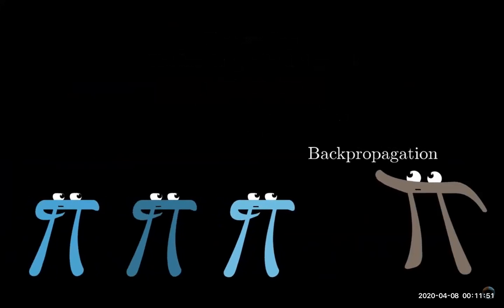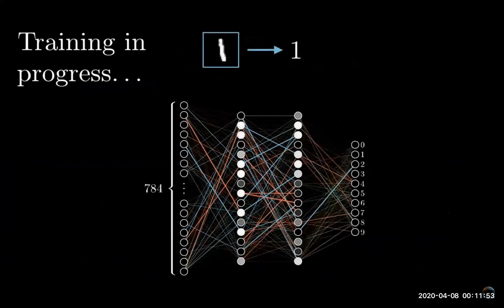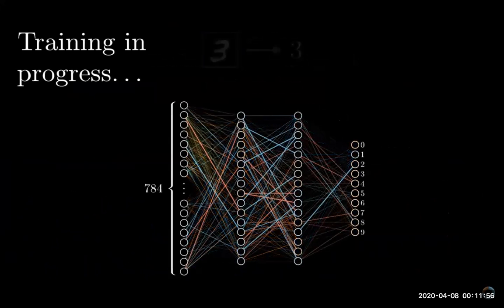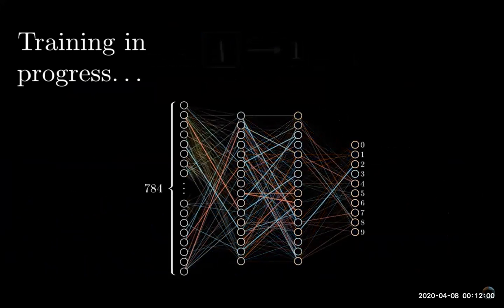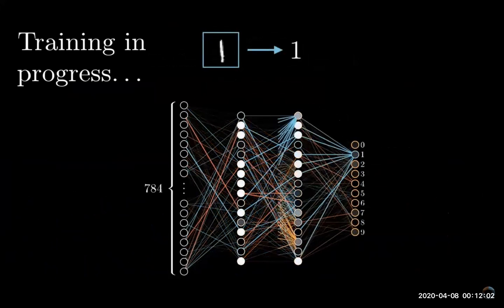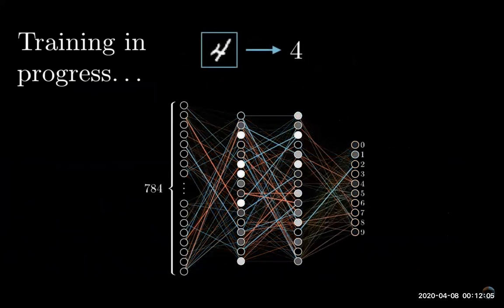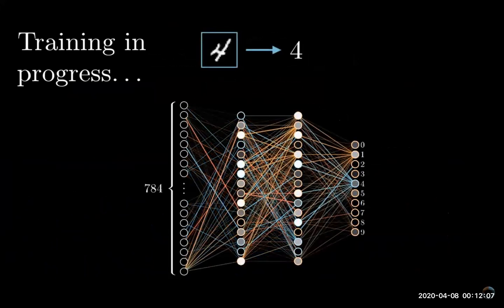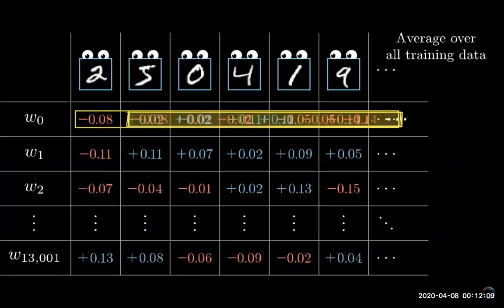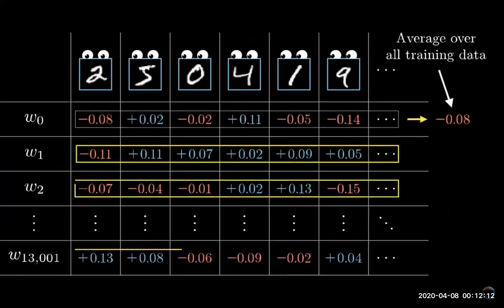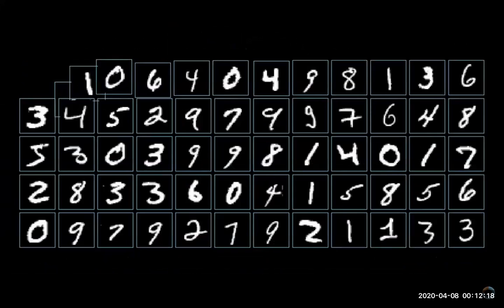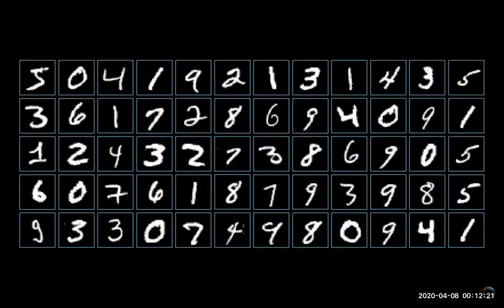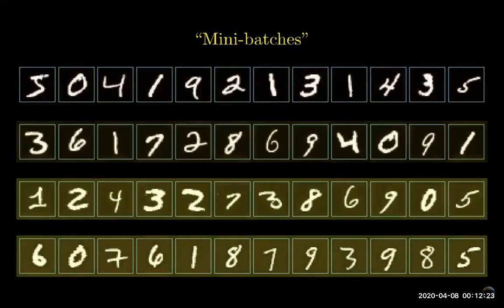Let's just sum it up for ourselves. Back propagation is the algorithm for determining how a single training example would like to nudge the weights and biases, not just in terms of whether they should go up or down, but in terms of what relative proportions to those changes cause the most rapid decrease to the cost. A true gradient descent step would involve doing this for all your tens of thousands of training examples and averaging the desired changes you get, but that's computationally slow. So instead you randomly subdivide the data into mini batches and compute each step with respect to a mini batch.